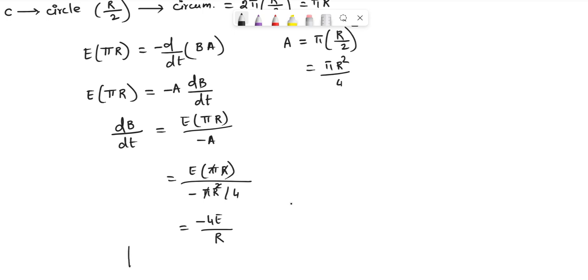Now, the magnitude of the rate of change of magnetic field can be written as 4E over r. On substituting the given values,